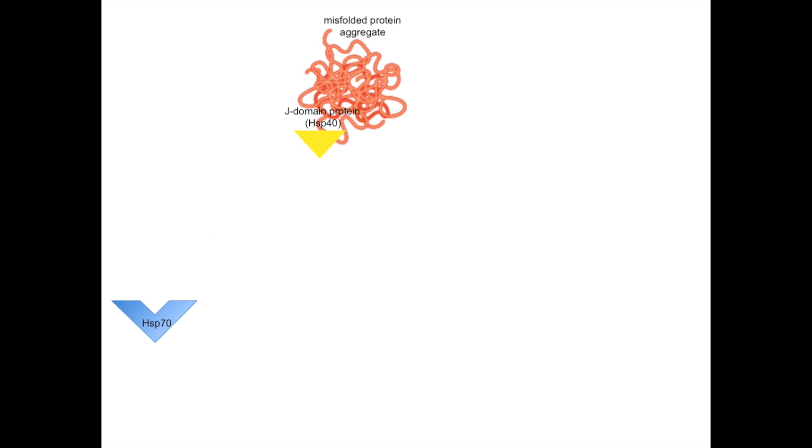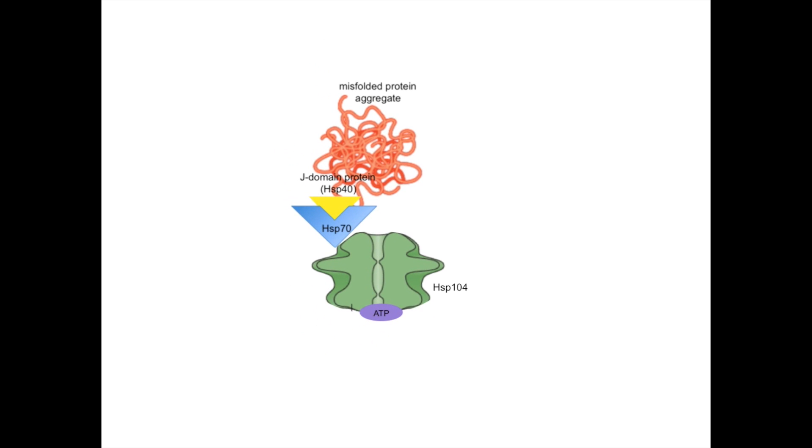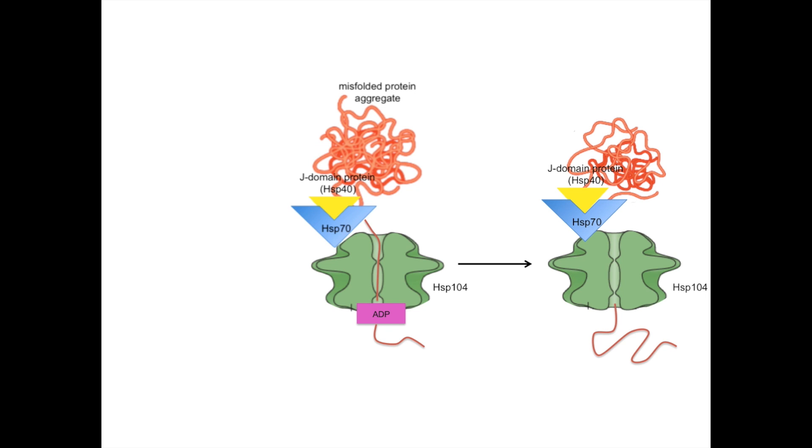First, the misfolded protein aggregate interacts with the J-domain protein, causing HSP-70 to be recruited. The nucleotide binding domain of HSP-70 directly interacts with the middle domain of HSP-104 in order to catalyze ATP hydrolysis in HSP-104. HSP-104 selects individual polypeptides and threads them through its central pore. In doing so, these proteins are unfolded and then released to fold into their native conformations either on their own or with the assistance of chaperones.